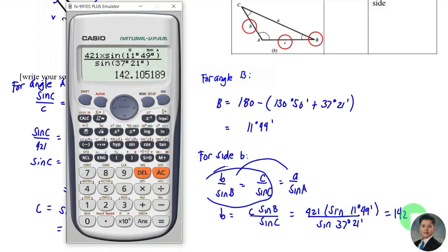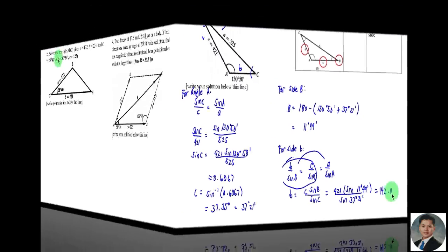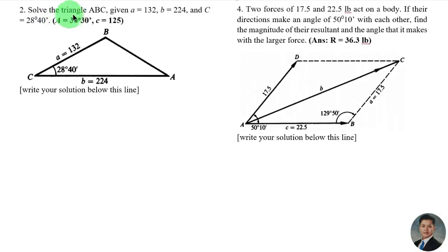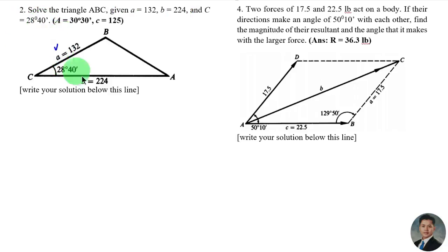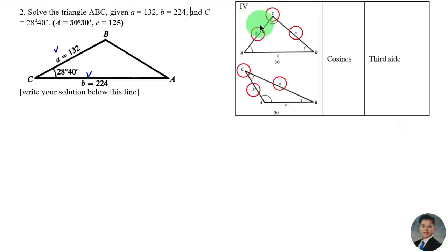For example number two: solve the triangle ABC given side a = 132, side b = 224, and angle C = 28 degrees 40 minutes. We have two sides and the included angle, so therefore this is Case 4.